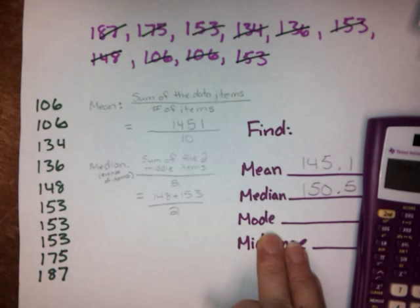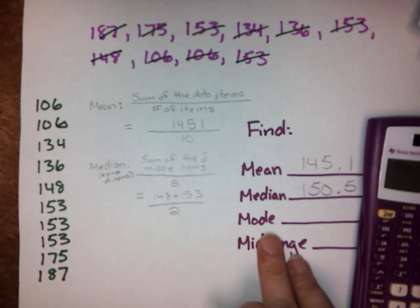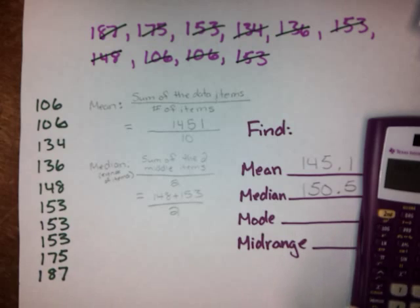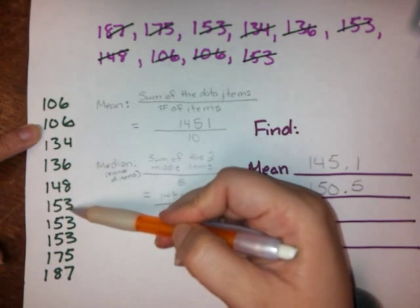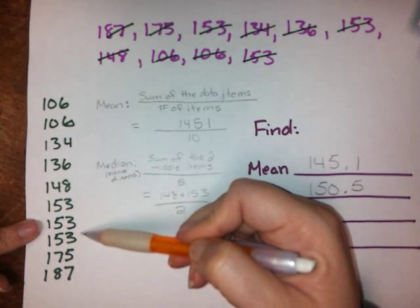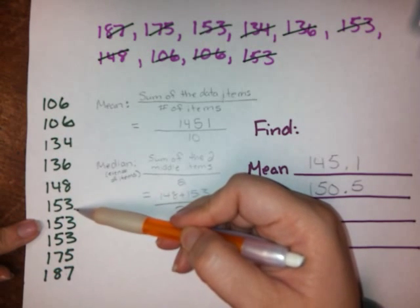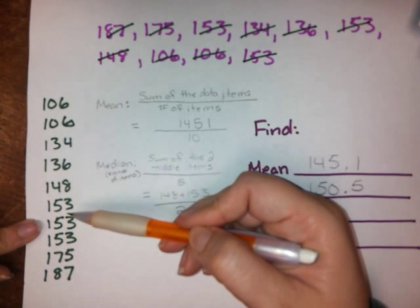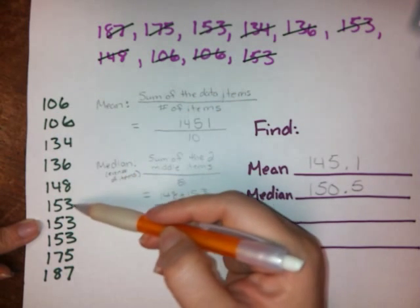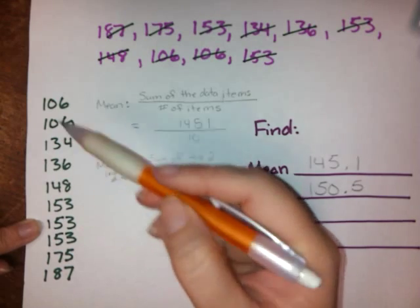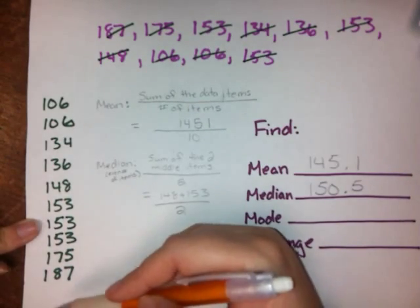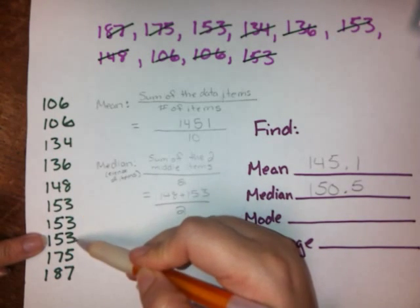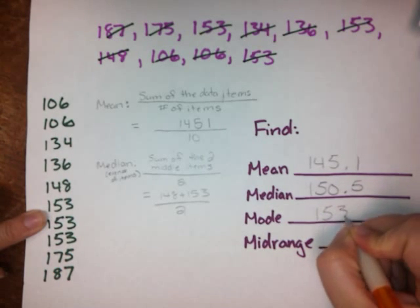Now, the mode. The definition of the mode is just the value that occurs most often in the data set. So which number shows up most often? Well, we've got two 106s, these others just show up once, but 153 shows up three times — it shows up more times than anything else in the data set. If more than one data value had the highest frequency, say we had three 106s and three 153s, both of those would be modes. If we didn't have any number that had more than anything else, then there would be no mode. But right now we've got three 153s, so our mode is 153.